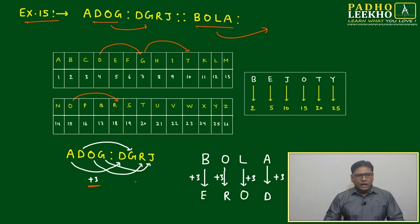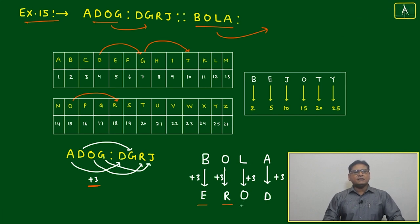Simple. BOLA plus 3: E, O plus 3: R, L plus 3: O, A plus 3: D. This means BOLA will be related in a similar way by the group of words EROD.